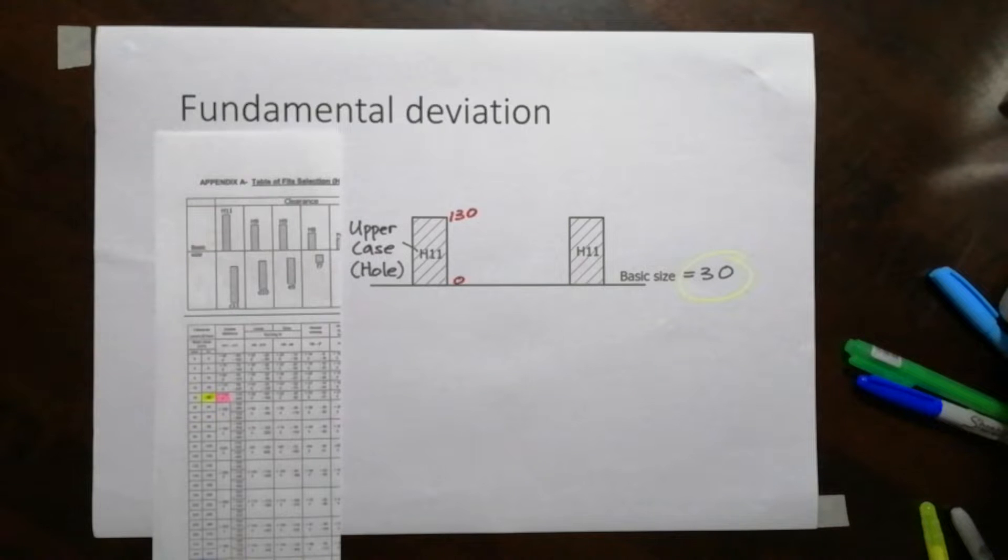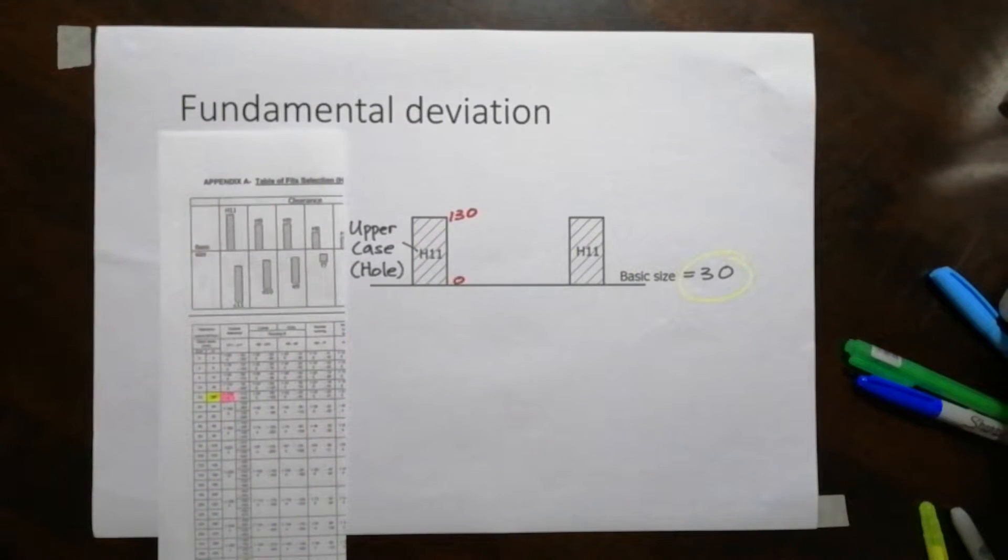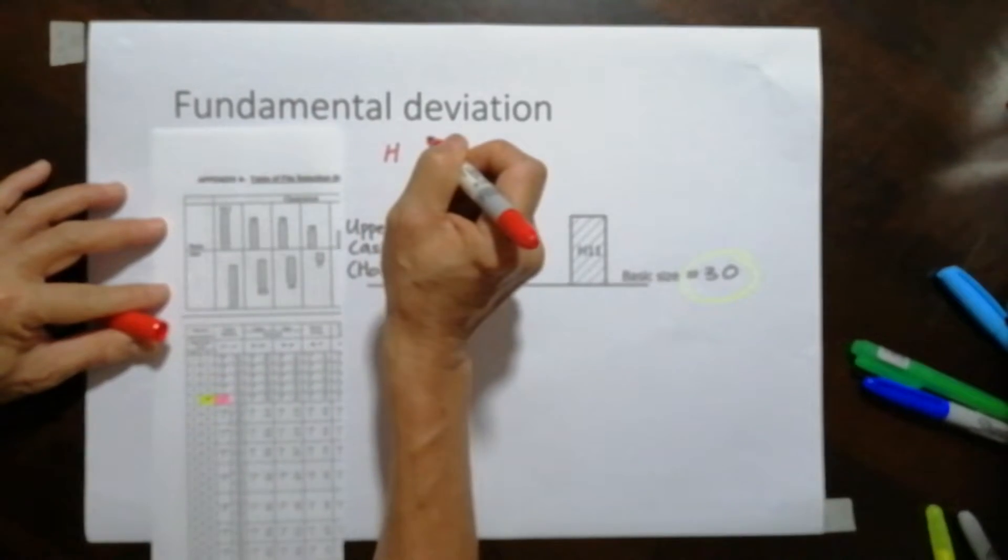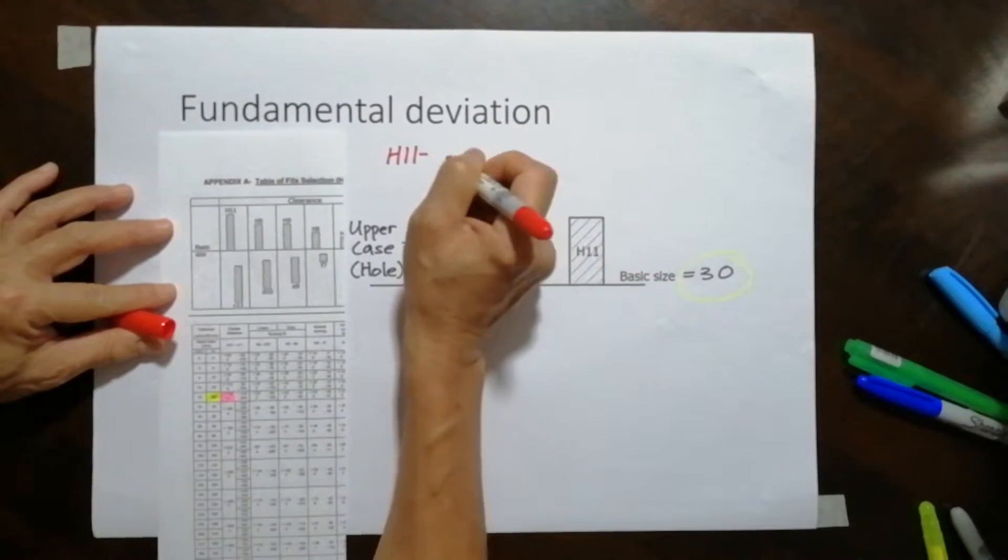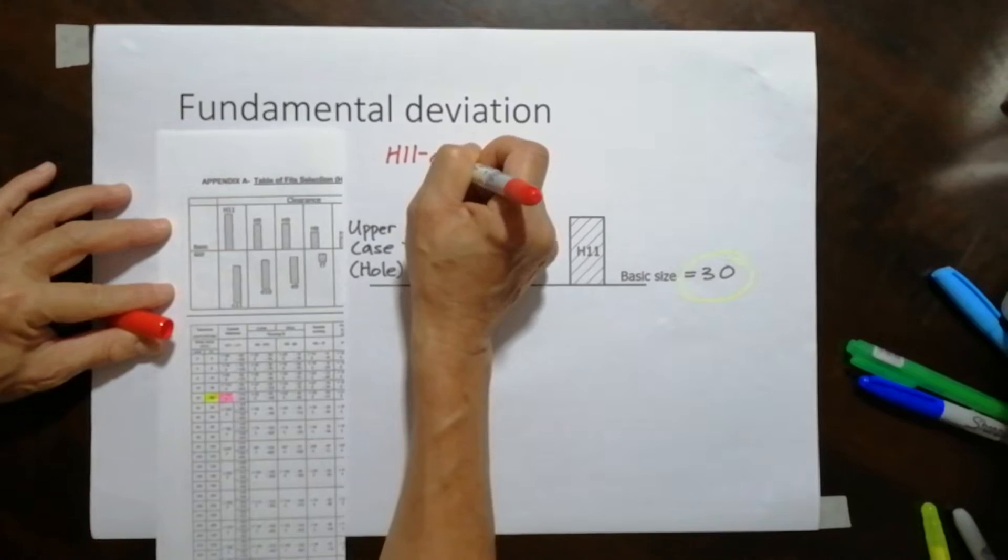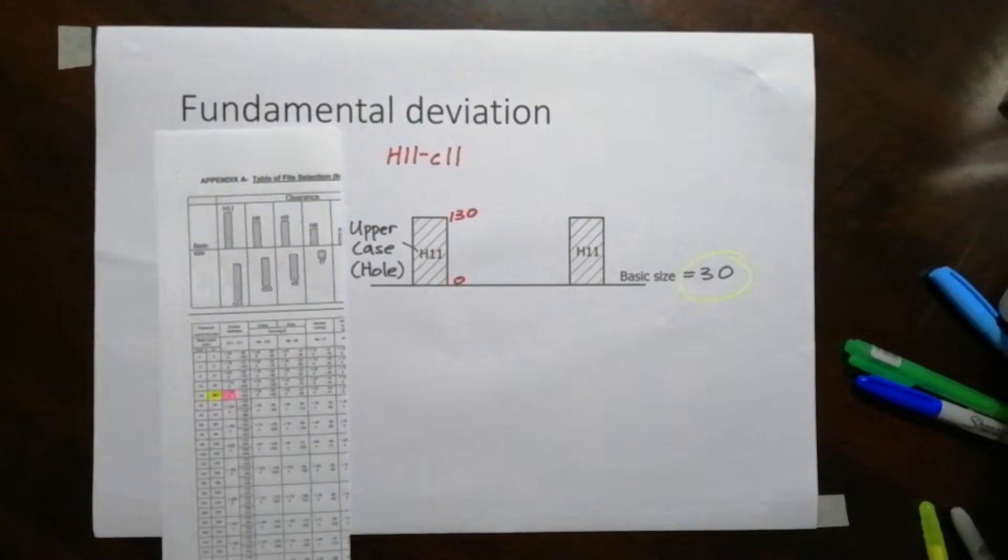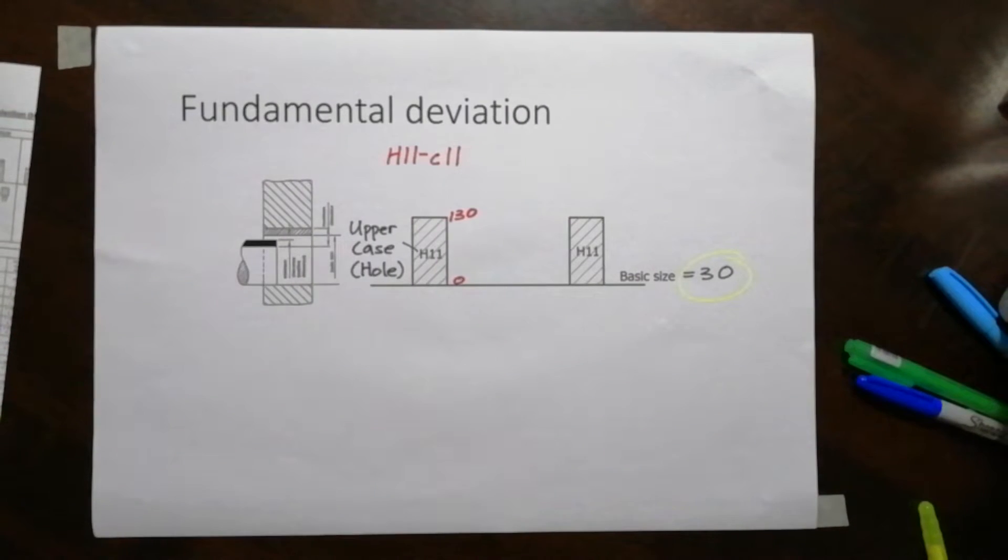Now let's say you're given the fit. This fit is given as H11 dash C11. So basically where is C11? C11 is basically, I'm going to put it over here now. Now I'm going to draw the C11.